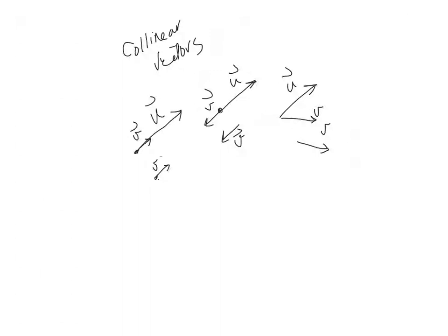In general, the collinear vectors are the ones that are scalar multiples of each other. For instance, I can say that u is k times v. So, if two vectors can be written as scalar multiples of each other, then we know that those two vectors are collinear.